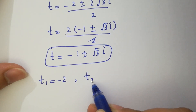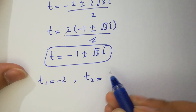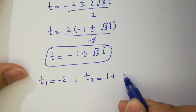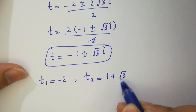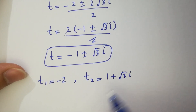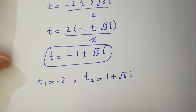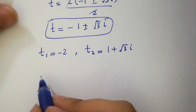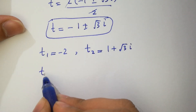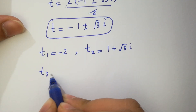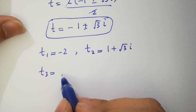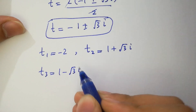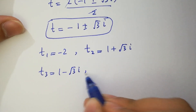Finally, we have 6 solutions in total: t1 equals minus 2, t2 equals minus 1 plus (√3 i)/2, t3 equals 1 plus (√3 i)/2, and the corresponding conjugate solutions.